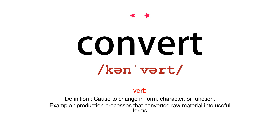Verb. Definition: cause to change in form, character, or function. Example: production processes that converted raw material into useful forms.